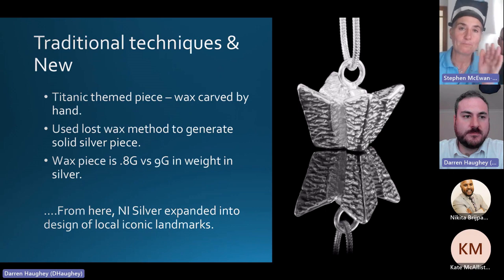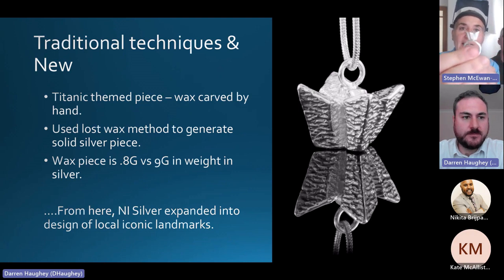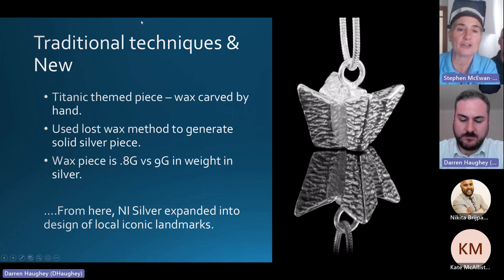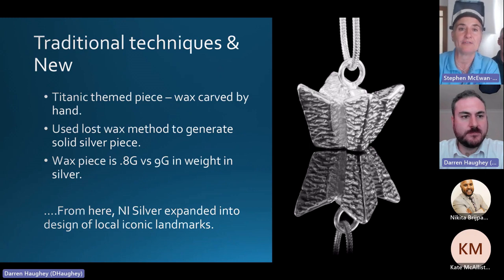We can make those cast pieces into necklaces, rings, charms, whatever we need. As Darren said, there's quite a lot of finishing and polishing from the sand casting method because it does come out quite gritty. It's quite a slow process — you have to carve it in wax first, which takes a few weeks, then get it cast, then finish it.